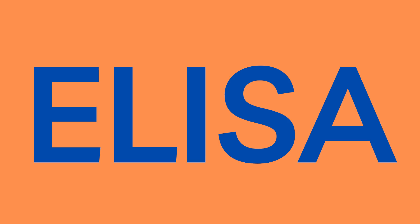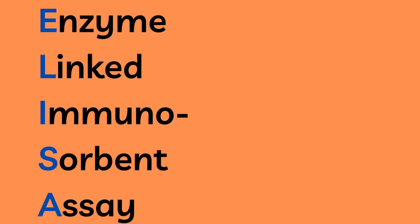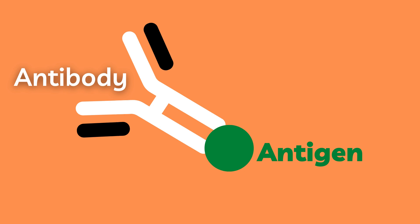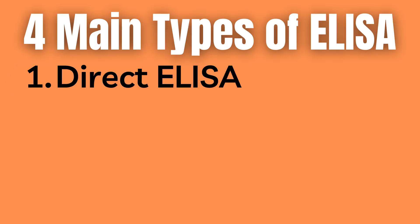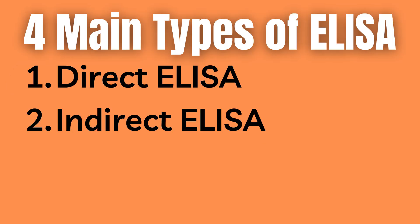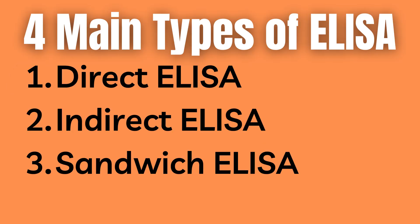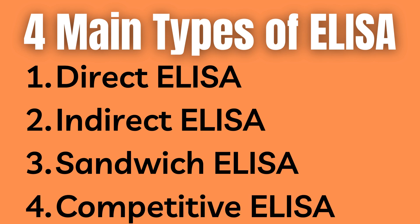ELISA is an abbreviation of enzyme-linked immunosorbent assay and utilizes the bond between an antibody and its specific antigen in order for it to work. There are four main types of ELISA: direct ELISA, indirect ELISA, sandwich ELISA, and competitive ELISA.